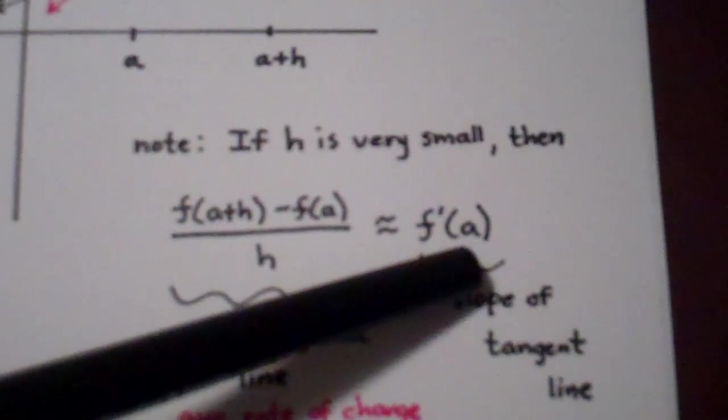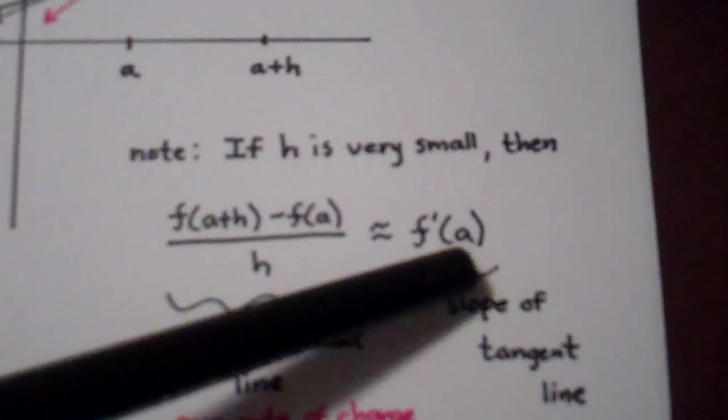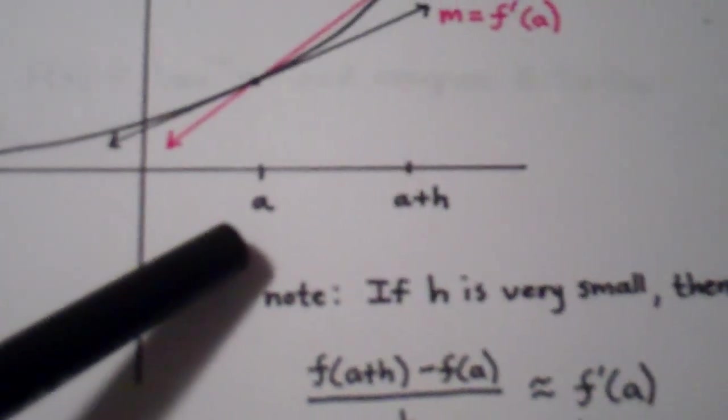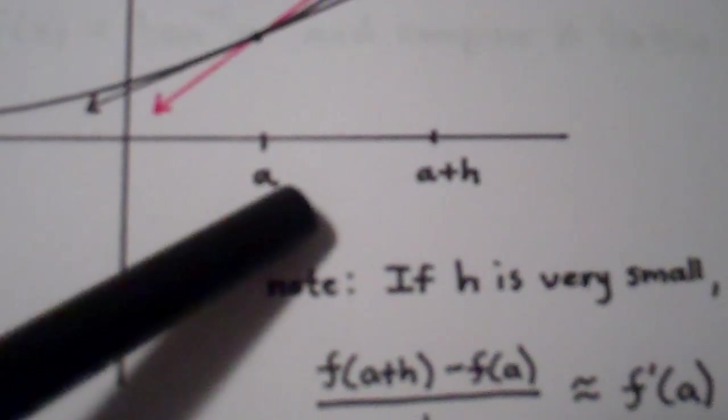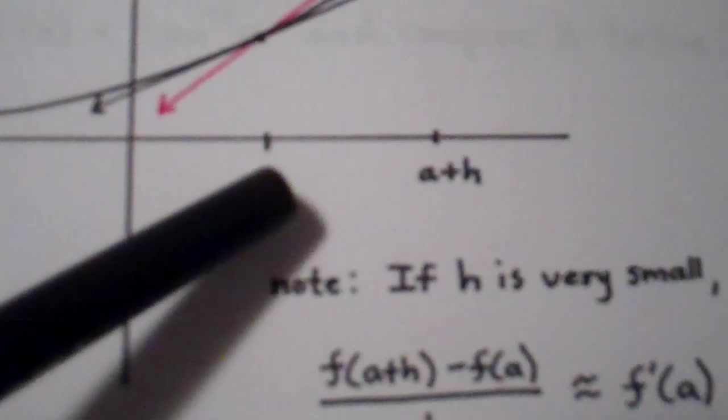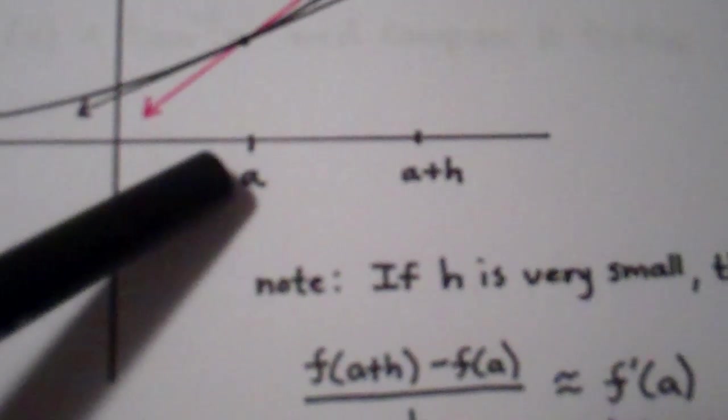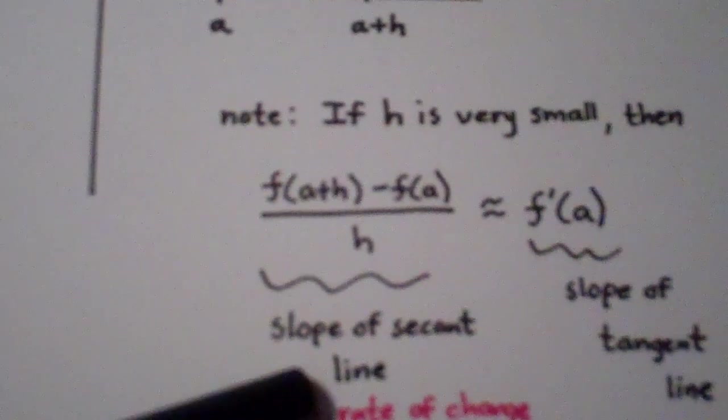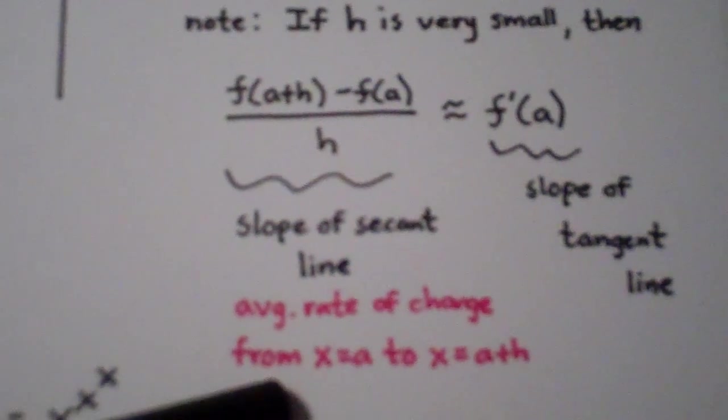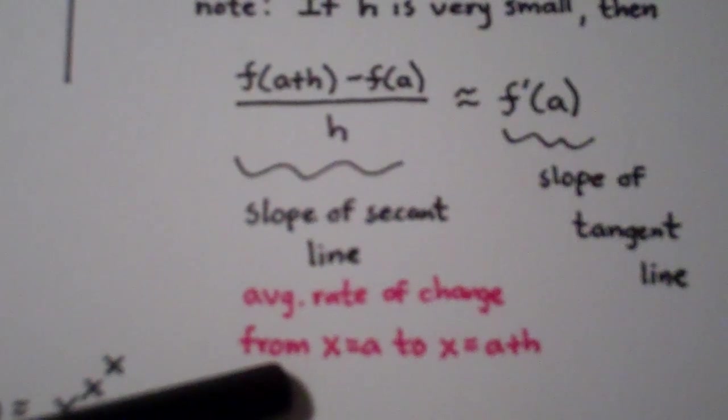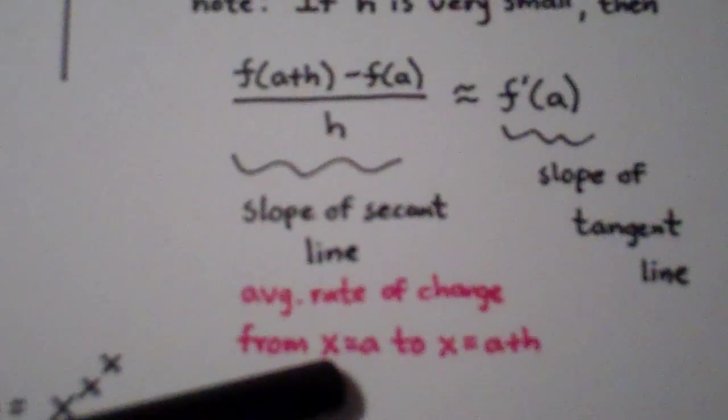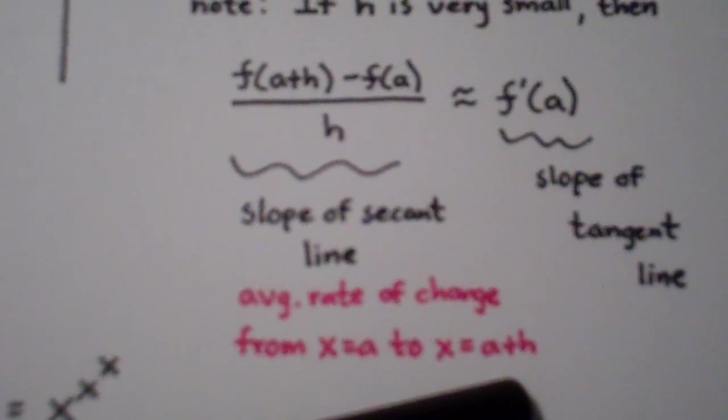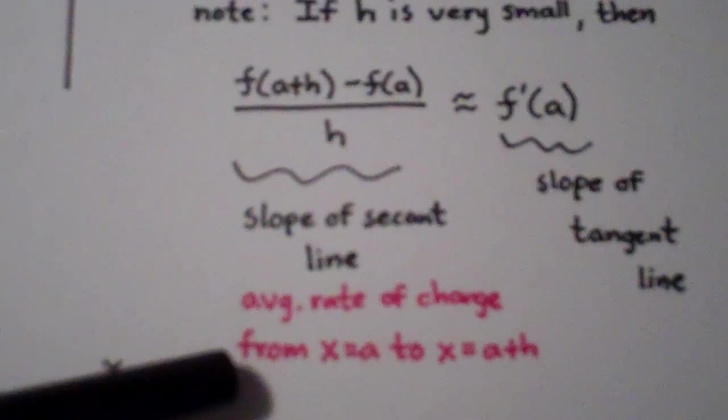So to estimate the derivative, all we really basically do is we take a point that's just a little bit beyond the point where you're trying to find the slope, and find the slope of that secant line. The slope of the secant line is also sometimes commonly referred to as the average rate of change from x equals a to x equals a plus h. As a matter of fact, that's what we call it in pre-calculus.